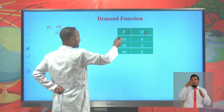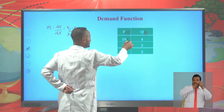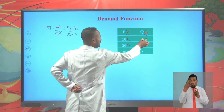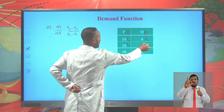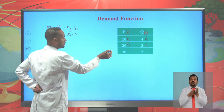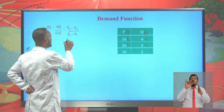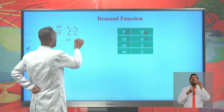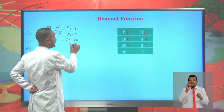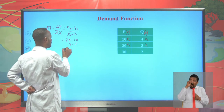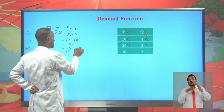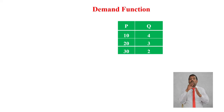Taking 10 as y-initial and 20 as y-final, and 4 as x-initial and 3 as x-final, substituting into the formula gives: (20 − 10) / (3 − 4) = 10 / (−1) = −10. This value of −10 is the slope of the demand curve.